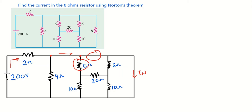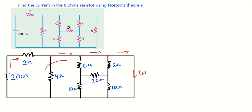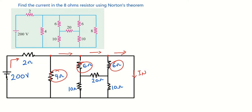When the current takes that direction and gets here, there is no resistor here but there is a resistor there, so the current doesn't want to be opposed and will take the path of zero resistance. This means the 4-ohm, 10-ohm, 20-ohm, and 10-ohm resistors will all be short-circuited.